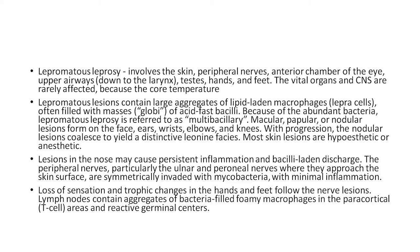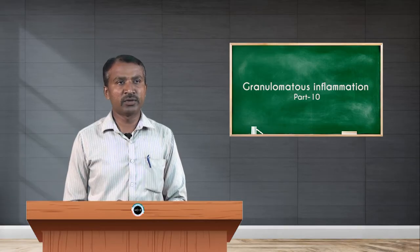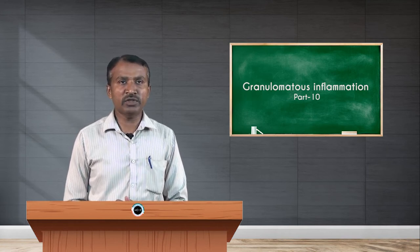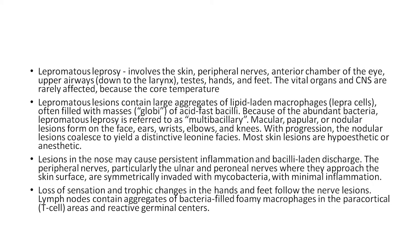Lepra cells are often filled with masses called globi, or acid-fast bacilli. Because of the abundant bacteria, lepromatous leprosy is referred to as multibacillary. Macular, papular, or nodular lesions form on the face, ears, wrist, elbows, and knees. With progression, the nodular lesions coalesce to yield a distinctive leonine facies.